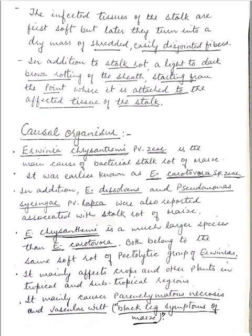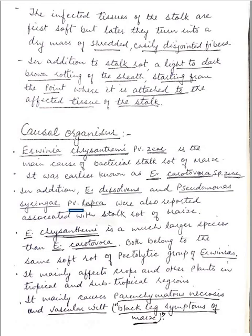This bacterium was earlier known as Erwinia carotovora species zeae. In addition, Erwinia dissolvens and Pseudomonas syringae pathovar lapsa were also reported associated with stock rot of maize. Erwinia chrysanthemi is a much larger species than Erwinia carotovora, and both belong to the same soft rot pectolytic group of Erwinia.